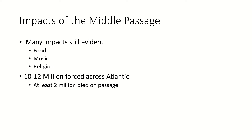11 to 12 million Africans were put on ships and shipped to the New World — and that doesn't even count the millions that died during the trip. It was horrible, and obviously when abolitionists came along, they focused on the abuses of the Middle Passage first.